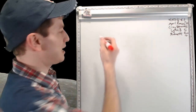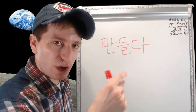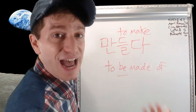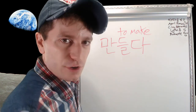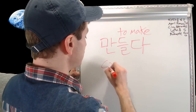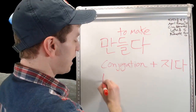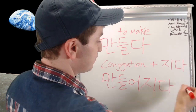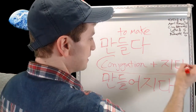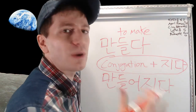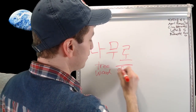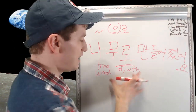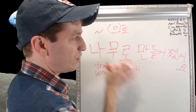You can attach 지다 to some verbs to make them passive. You do regular conjugation and then attach 지다, then conjugate that. For example, 만들다 (to make) in the 아/어 form is 만들어, so the passive is 만들어지다 (to be made). So you can say 나무로 만들어졌어요 (It is made of wood), using 으로 to indicate what it's made of. Another example: 주다 (to give) becomes 주어지다 (to be given). And 당기다 (to pull) becomes 당겨지다 (to be pulled).